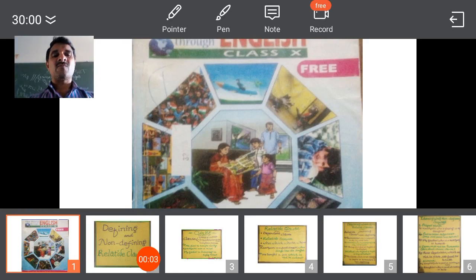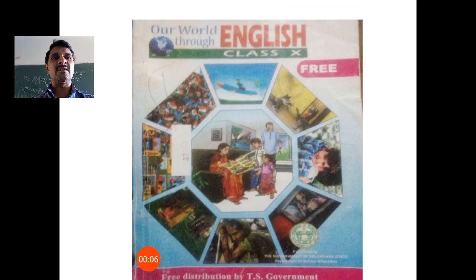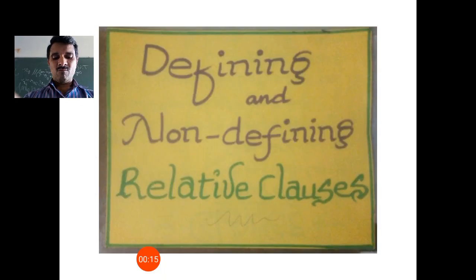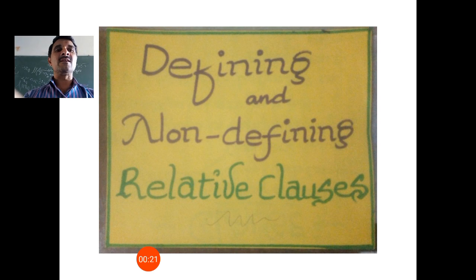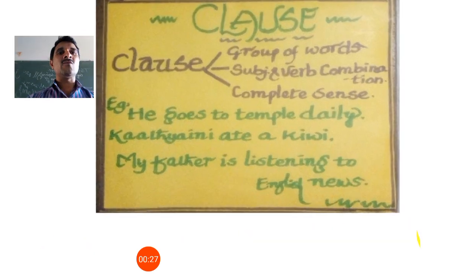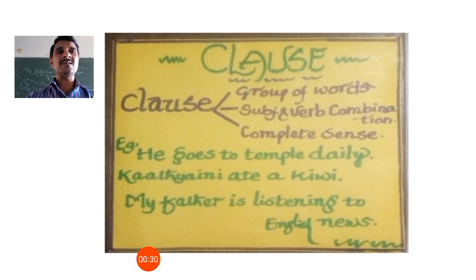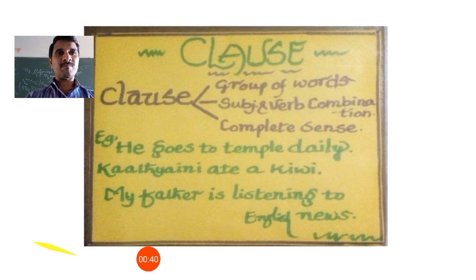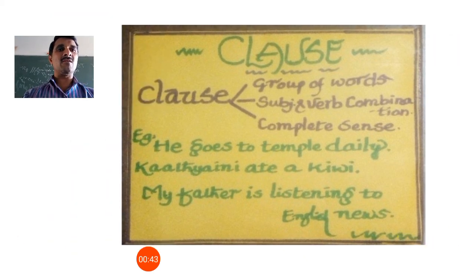Hello friends, welcome back to the second session on defining and non-defining relative clauses of 10th class syllabus. Before I get into the topic, let's take a look at clauses in English. A clause is a group of words which has a subject and verb combination and forms a complete sentence. If a sentence fulfills all three conditions, we call it a clause.